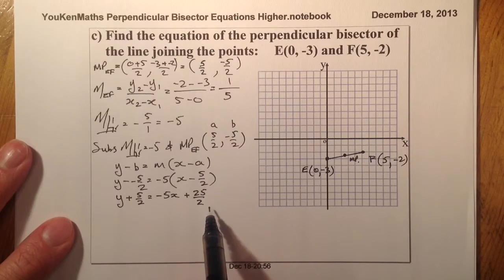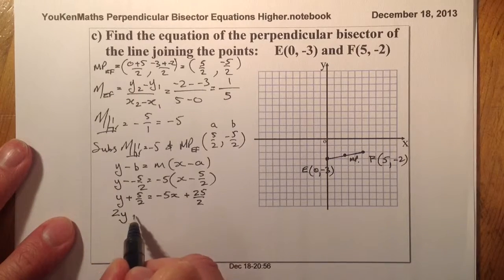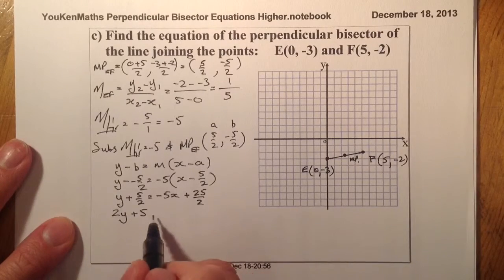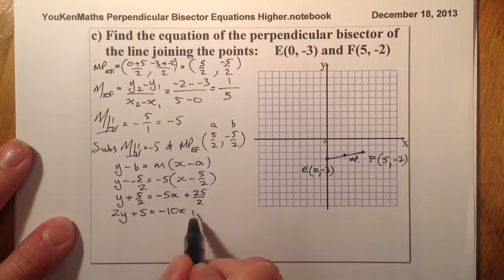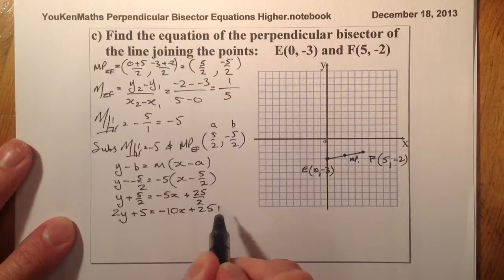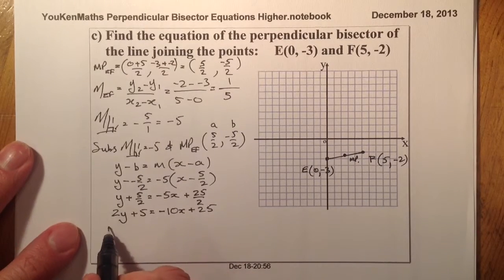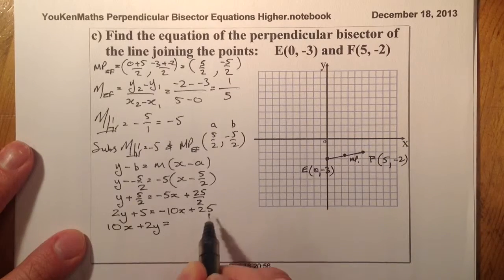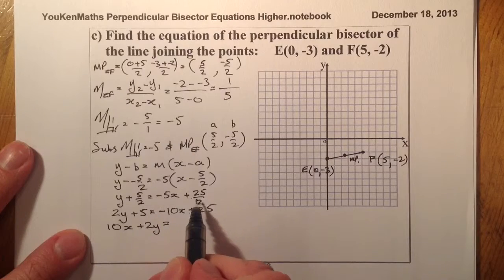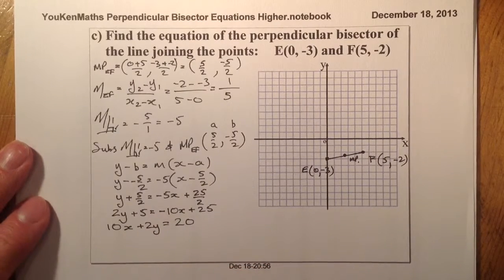I can multiply through by 2: that gives 2y plus 5 equals minus 10x plus 25. Gathering with x's first on the left-hand side: 10x plus 2y, and bringing the 5 over becomes minus, giving 20. So the equation is 10x plus 2y equals 20.